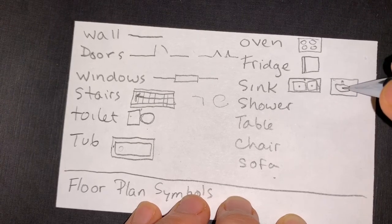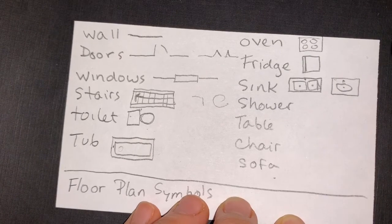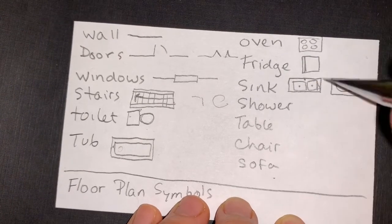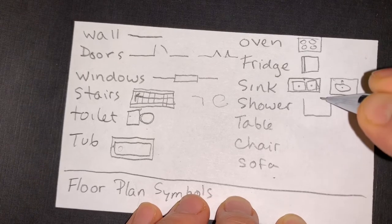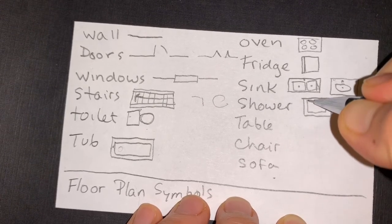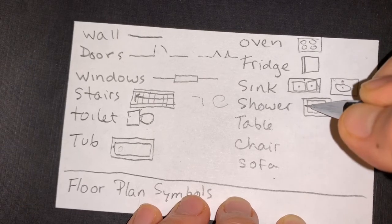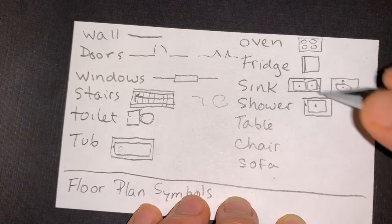A shower, similar to the tub and sink, usually a square. Indicating here where it's going to be the lip, because you have to have something to catch water, the drain, and then perhaps the direction of the shower head.